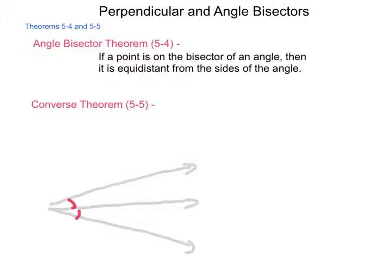Then any point that sits on this is going to be equidistant from the sides of the angle. Now, when we look at the distance from one point to a line, that distance is always going to be perpendicular. If you go anything other than perpendicular, you're going further than you have to.